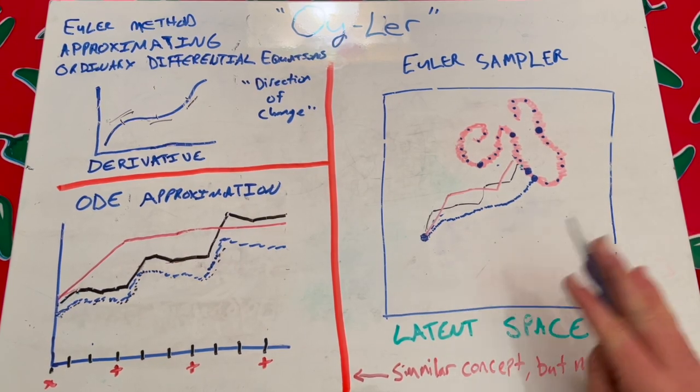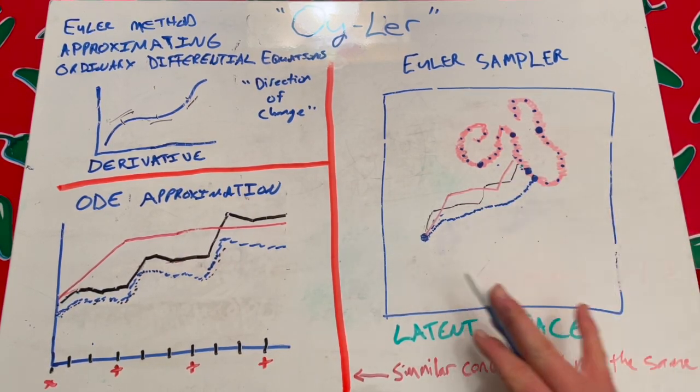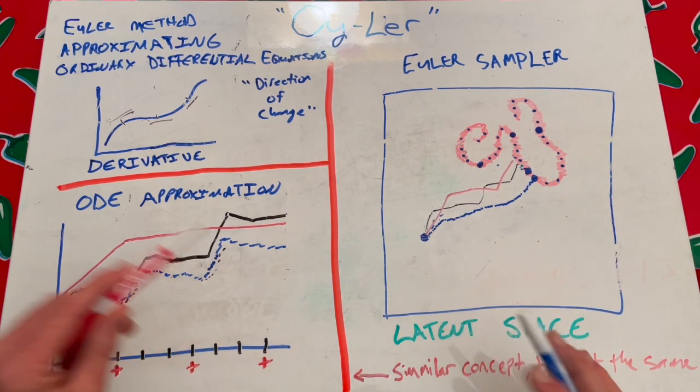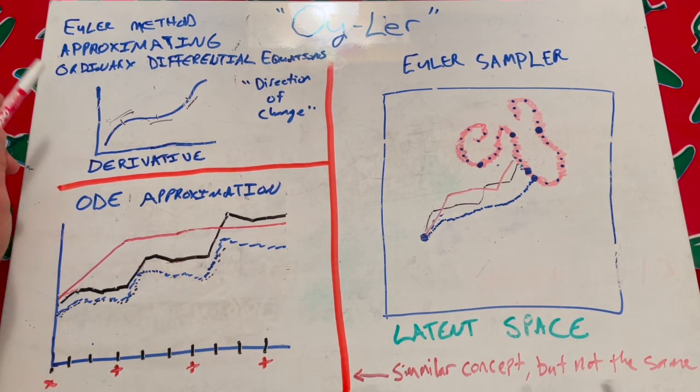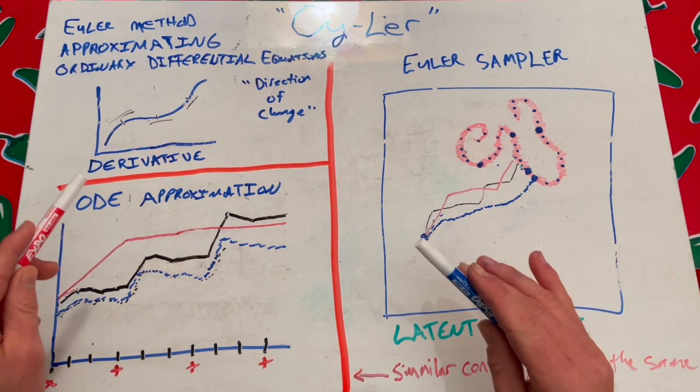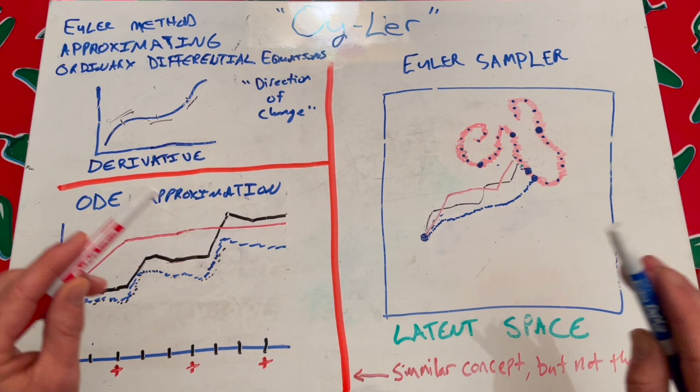In order to better understand what's happening with the Euler sampler in the latent space, which I'll make a longer video about later, it's first helpful to have a background in this thing called the Euler method, which there's a similar concept in the step size is important to the end result.